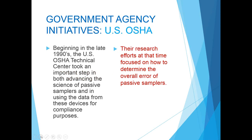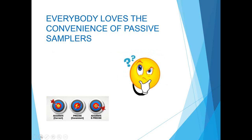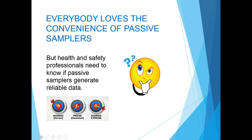Beginning in the 1990s, there were also important initiatives from government agencies on passive samplers. The US OSHA Technical Center took important steps in advancing the science of passive sampling, as well as advancing its use for compliance sampling. Their efforts focused on how to determine the overall error of these devices. Health and safety professionals need to know if these devices are generating reliable data for their unique target compound, and OSHA initiatives help to answer these questions.